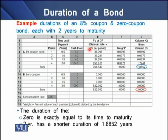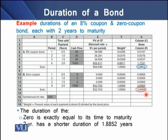We are discounting these individual cash flows at YTM, which is 5% at the half-year rate. Then we have the individual weights, determined by dividing each cash flow's present value over the sum of all present values. When we multiply each individual weight by the individual time of the periodic payment, we determine the overall duration of each bond. For bond A, we have a duration of 1.8852 years, and for bond B, we have a duration of exactly 2 years, which equals its nominal maturity. So the duration of the zero coupon bond is exactly equal to its time to maturity, while the coupon bond has a shorter duration of 1.8852 years.